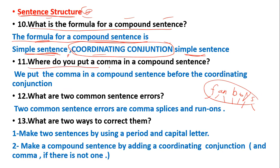Where do you put a comma in a compound sentence? We put the comma in a compound sentence before the coordinating conjunction, before and, nor, but, or, yet, so.